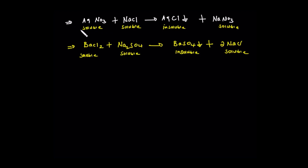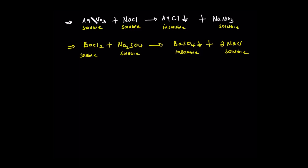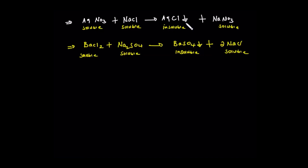For example, silver nitrate and sodium chloride react. Sodium is positive, chlorine is negative. Silver is positive and with chlorine it forms silver chloride, which is insoluble.